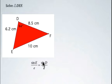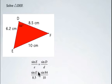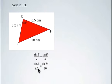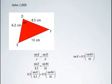So we're going to use sine law to calculate angle E. When we sub in for E, D, and angle D, we get sine E over 8.5 equals sine of 84 over 10. We're going to multiply both sides by 8.5, and we get sine E equals 8.5 times sine of 84 over 10.